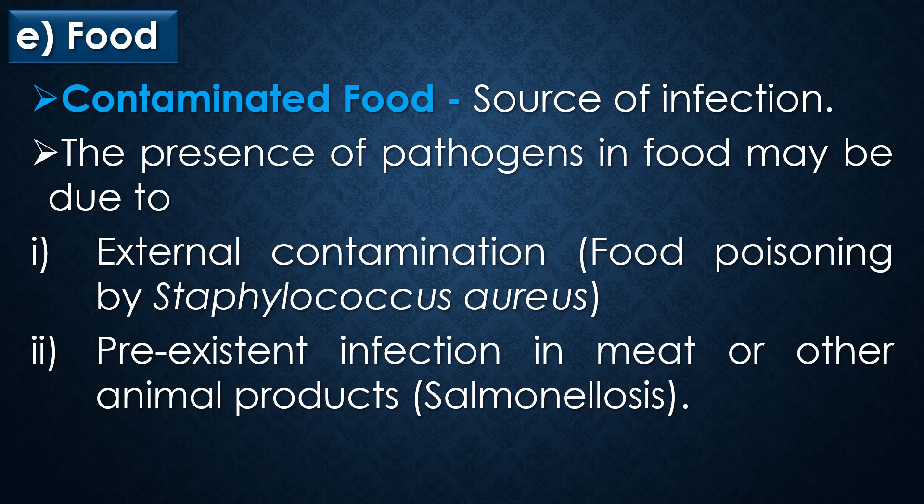The final source of microbial infection is food. Contaminated food may act as a source of microbial infection. The presence of pathogens in food may be due to external contamination — for example, food poisoning by Staphylococcus aureus — or due to pre-existing infection in meat or other animal products, for example salmonellosis.